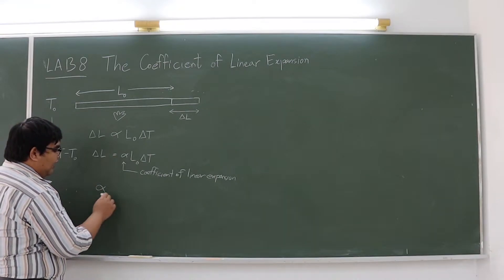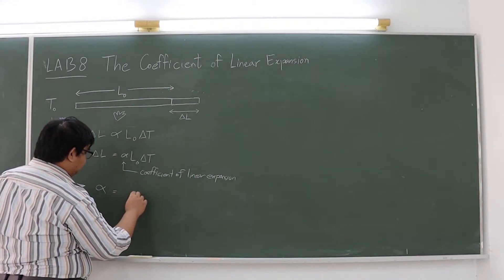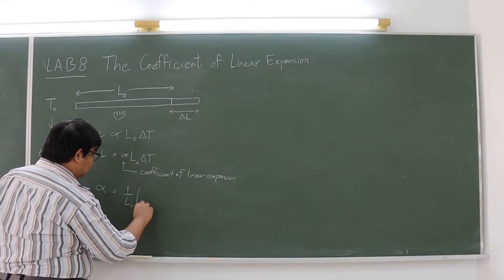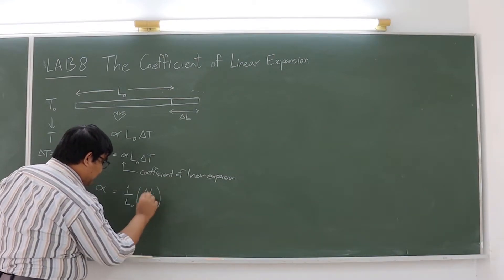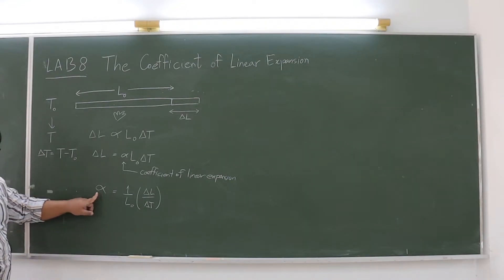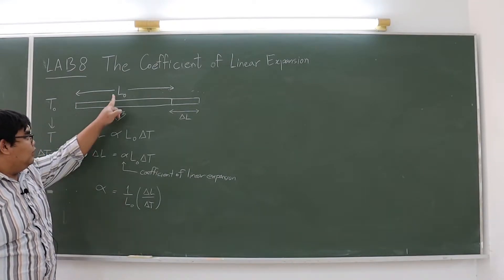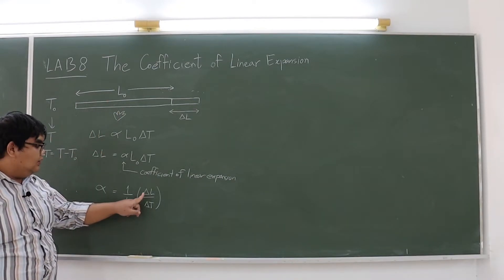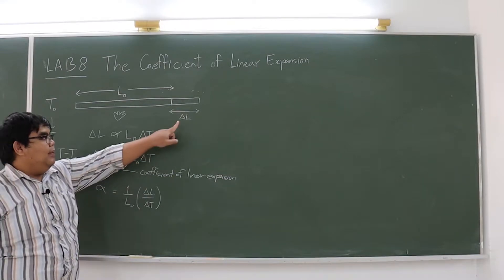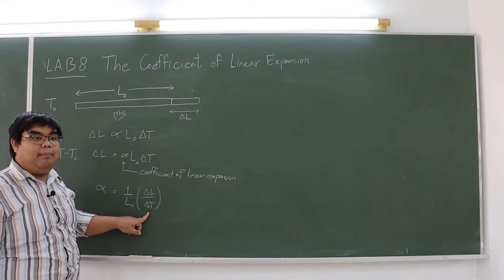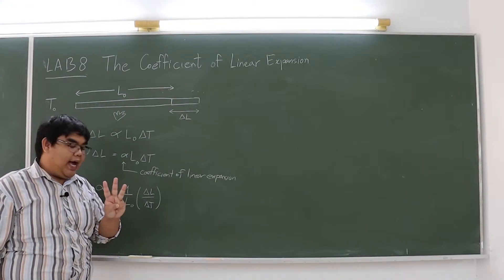If you want to determine this value, you can write it as alpha equals 1 over L0 multiplied by delta L over delta T. This means that if you want to know alpha, you have to measure three properties. The first one is the initial length L0. The second one is the length that spreads out after changing the temperature T0 to T. And the third one is the temperature difference.